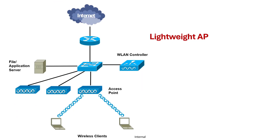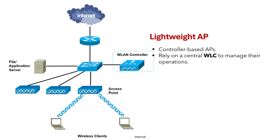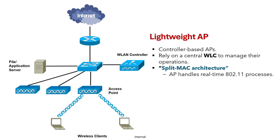Let's move on to the next access point type: the lightweight AP, also called a controller-based AP. Unlike autonomous APs, lightweight APs don't operate independently. Instead, they rely on a WLC — a Wireless LAN Controller — to manage their operations. This is known as a split MAC architecture, where the AP handles real-time 802.11 processes and the WLC takes care of the AP management functions.